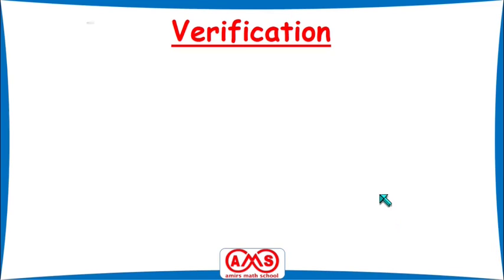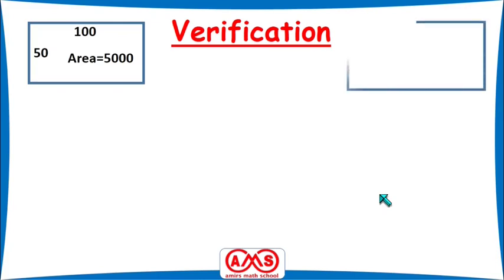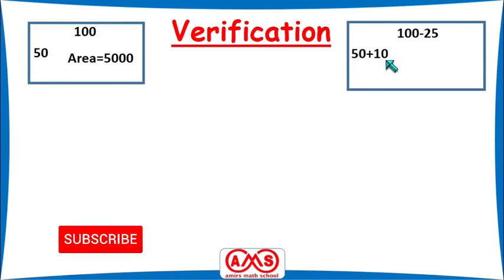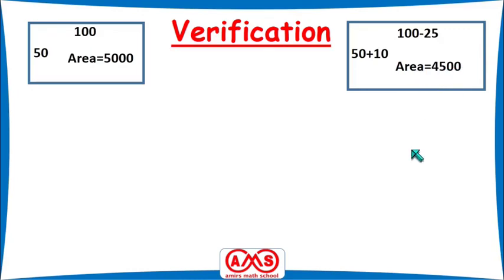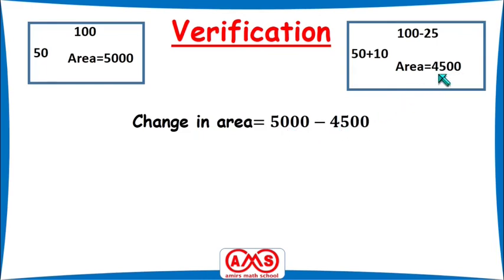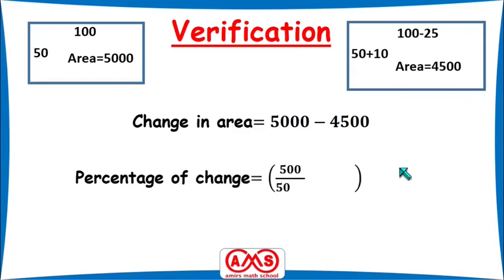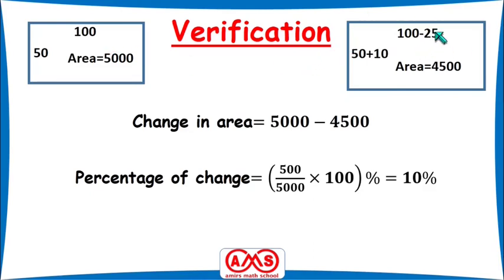Let's verify: take a rectangle with length 100, breadth 50, and area 5000. In the new rectangle, the length is decreased by 25%, giving 75. The breadth is increased by 20%, so 20% of 50 is 10, giving a new breadth of 60. The new area is 75 times 60, which is 4500. The change is (5000 minus 4500) divided by 5000 times 100% equals 10% decrease in area.